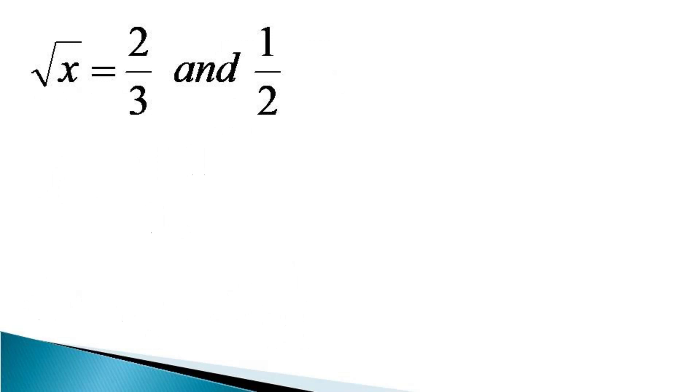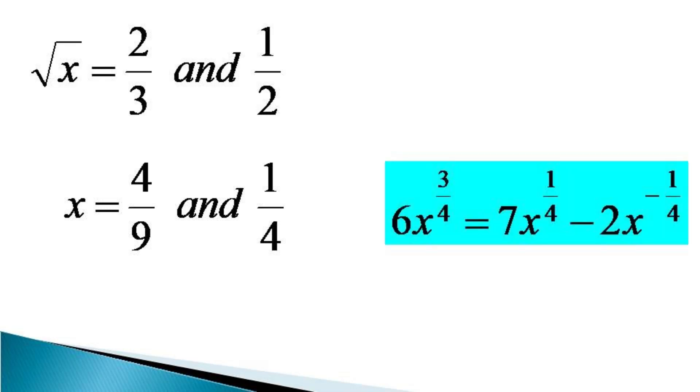Squaring both the sides we can get the value of x as equal to 4 by 9 and 1 by 4. It can be verified from the original equation though it will be a little bit tricky that both 4 by 9 as well as 1 by 4 satisfy the given equation and hence these are the solutions of the given equation. Thanks for watching.